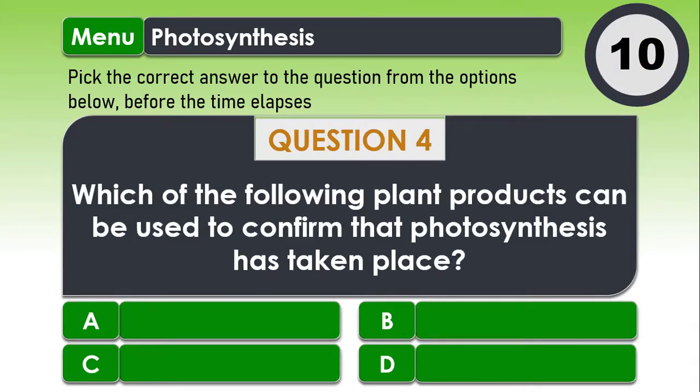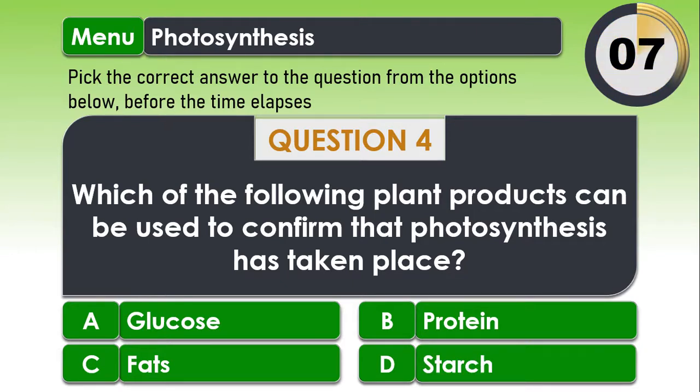Question 4. Which of the following plant products can be used to confirm that photosynthesis has taken place? A. Glucose B. Protein C. Fats And D. Starch. The answer is D. Starch.